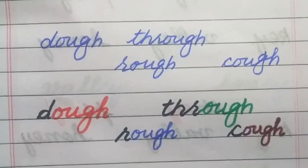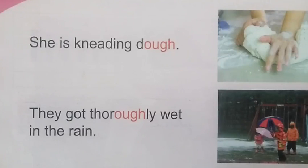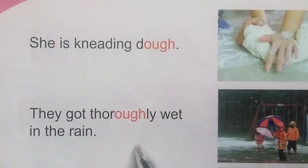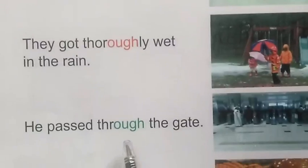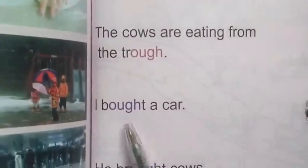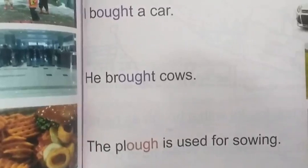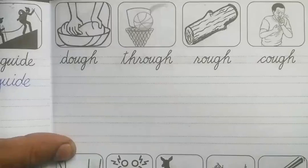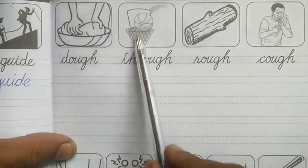In your Iqra 2, on pages 88 and 89, you have already read and learned that this phonogram has six sounds: dough, through, enough, cough, bought, and plow. These are the six sounds of this phonogram.